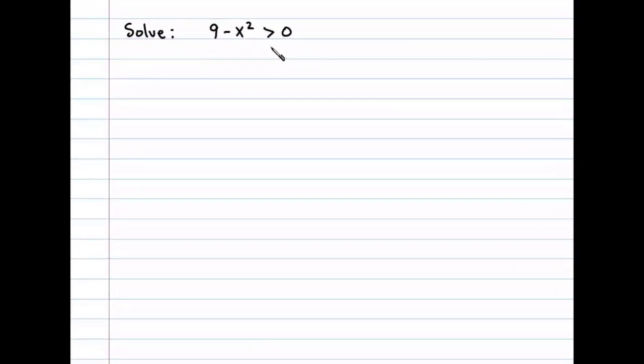Solve 9 minus x squared is greater than zero. The first thing I notice is that this is a quadratic inequality. If we let f(x) equal 9 minus x squared and graph that, we would notice that this function would be a parabola opening downward.